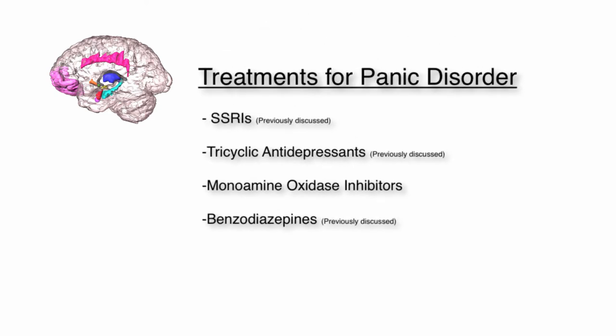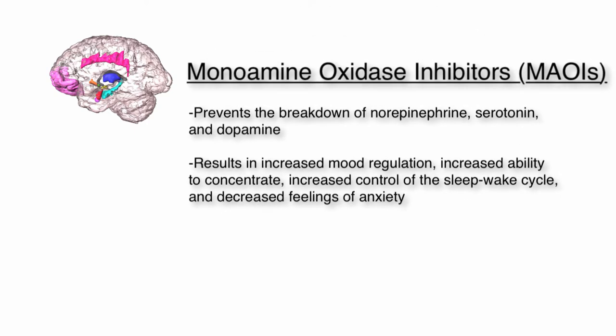The common treatments for panic disorder include SSRIs, tricyclic antidepressants, and benzodiazepines, all of which have been previously discussed. The other common treatment is monoamine oxidase inhibitors, or MAOIs. MAOIs prevent the breakdown of norepinephrine, serotonin, and dopamine, allowing more of these hormones to work in the brain for longer. This causes increased ability to concentrate, increased mood regulation, increased alertness and arousal, better control of the sleep-wake cycle, increased pleasure in movement, and helps to decrease feelings of panic.